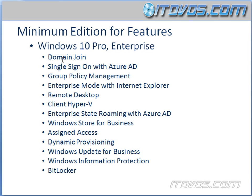With Windows 10 Pro and Enterprise, we're going to get Domain Joined — very important to memorize that if we want to join a domain, we need at least Pro or Enterprise. Also: Single Sign-On with Azure AD, Group Policy Management, Enterprise Mode with Internet Explorer, Remote Desktop, Client Hyper-V — important to memorize, if we want to use Hyper-V on a Windows 10 laptop or desktop we need Pro or Enterprise — Enterprise State Roaming with Azure AD, Windows Store for Business, Assigned Access, Dynamic Provisioning, Windows Update for Business, Windows Information Protection, and BitLocker.